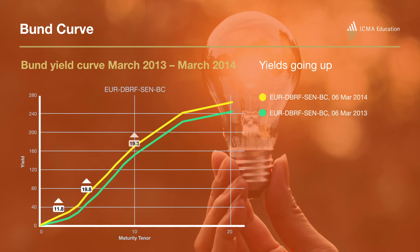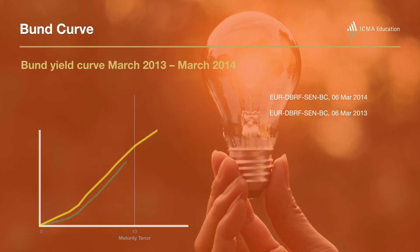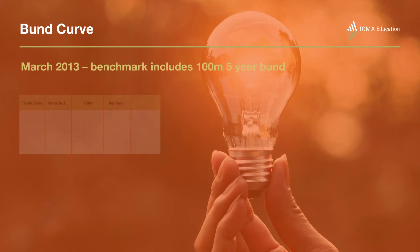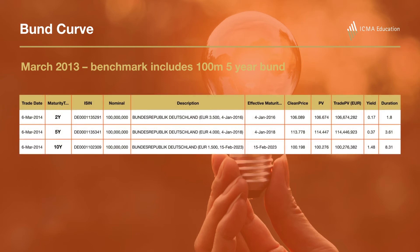Over the period shown, it's broadly a parallel shift up of 20 basis points over the year between March 2013 and March 2014. This is shown in the UBS Delta, which is a system we use for many of the examples in class. So yields are going up here, and we imagine that you're managing money versus a benchmark. It's March 2013, and your benchmark includes 100 million of the five-year Bund.